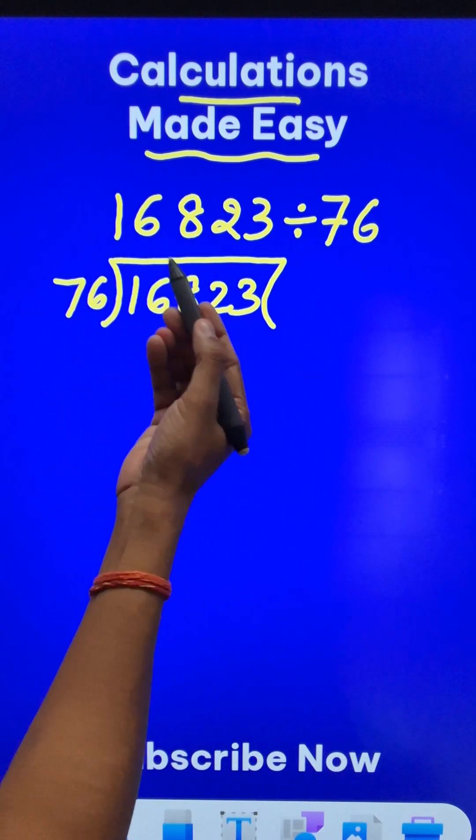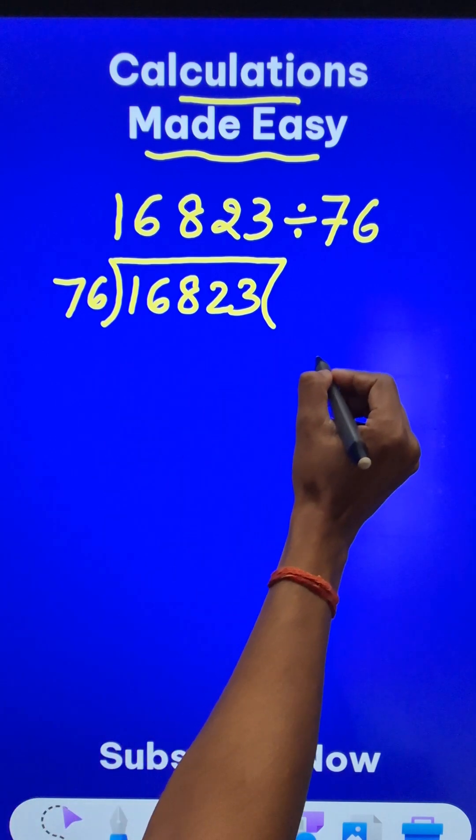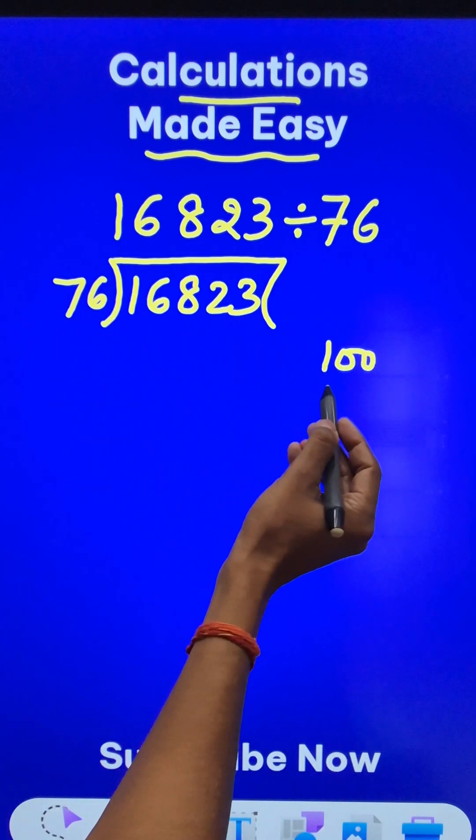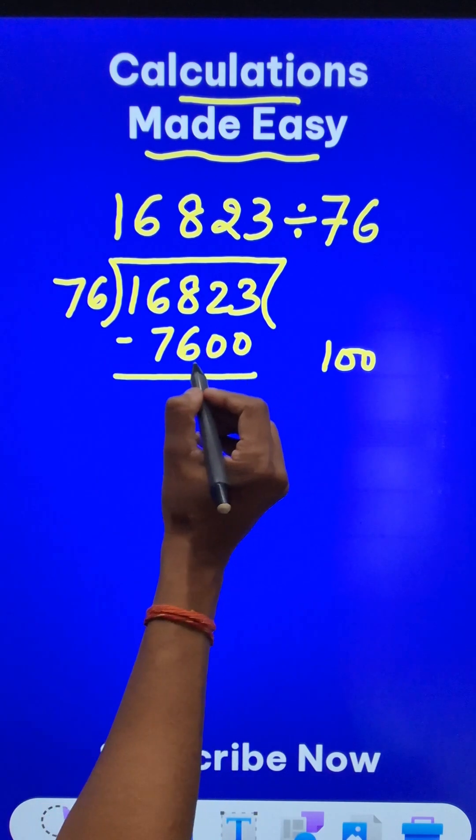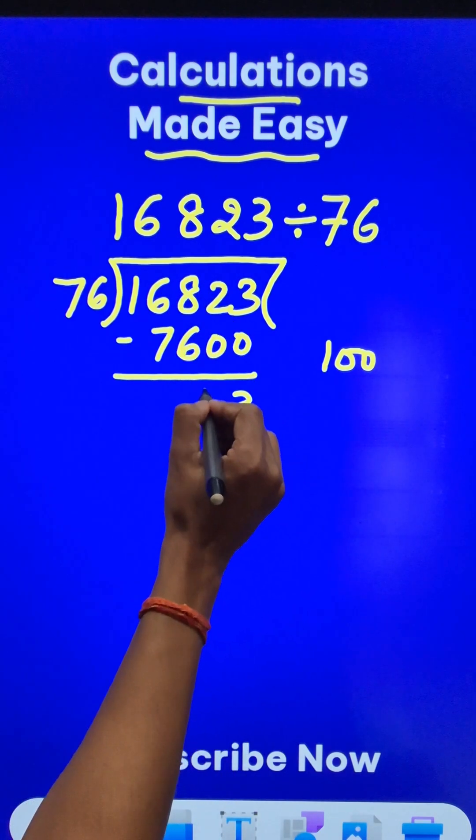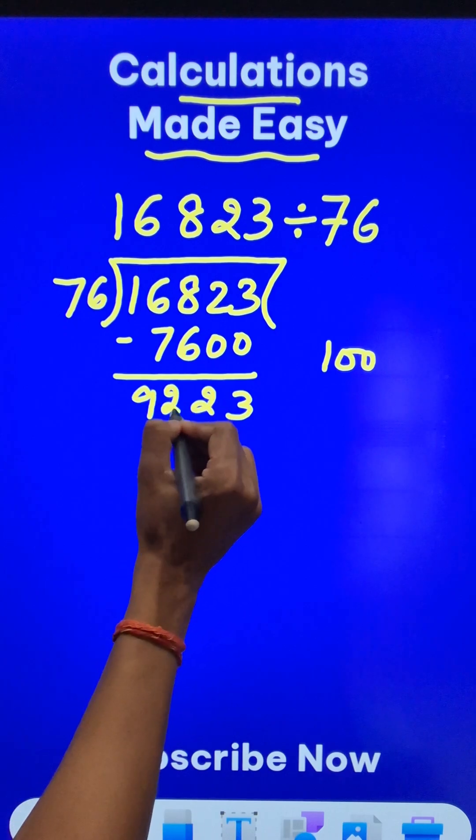Now I don't know 76 times table so I will do 100 times first. 76 times 100 is 7600 and when you subtract these numbers you get 9223.